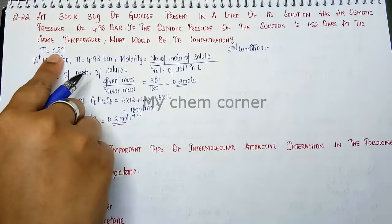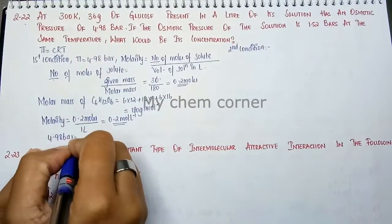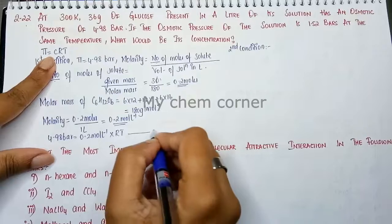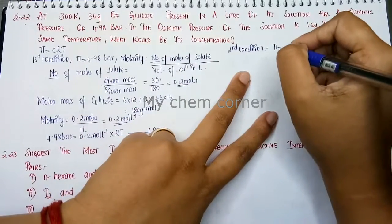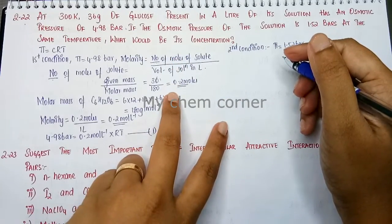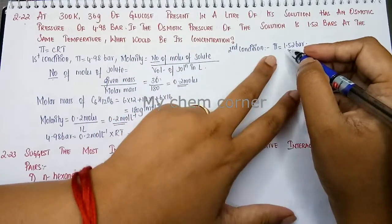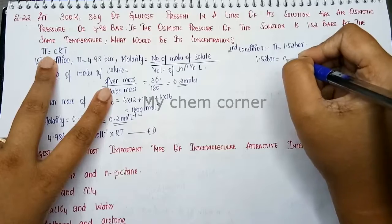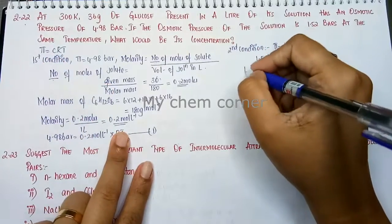For the first condition: osmotic pressure π = 4.98 bar equals concentration 0.2 mol/L × R × T — this is equation 1. For the second condition, the osmotic pressure is 1.52 bar, so: 1.52 bar equals C × R × T, where C is what we need to find — this is equation 2.